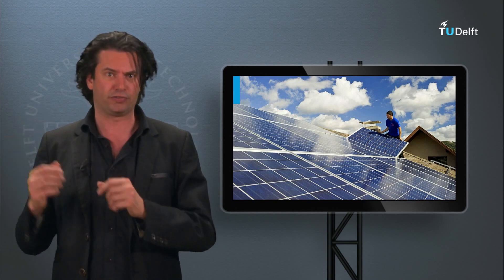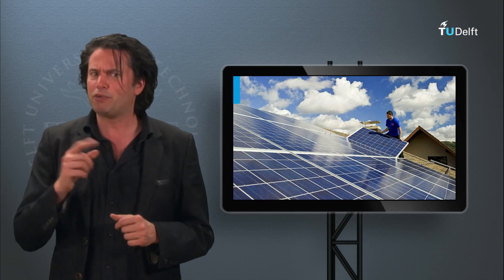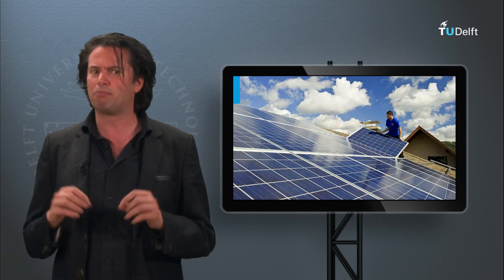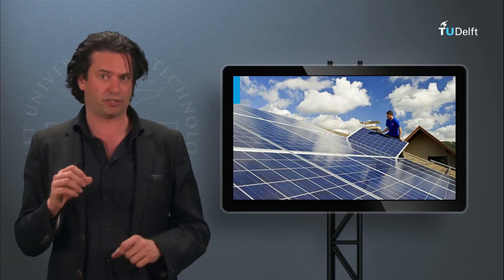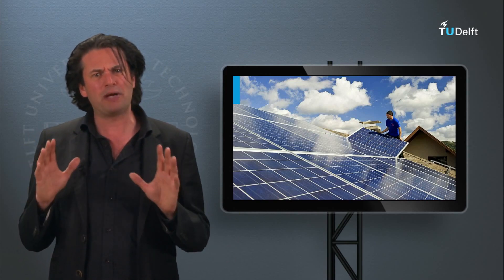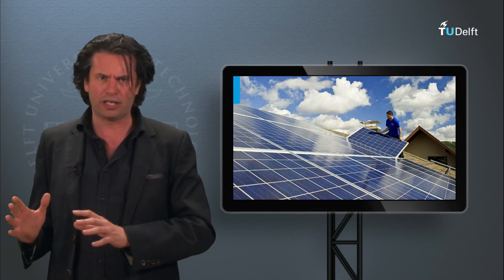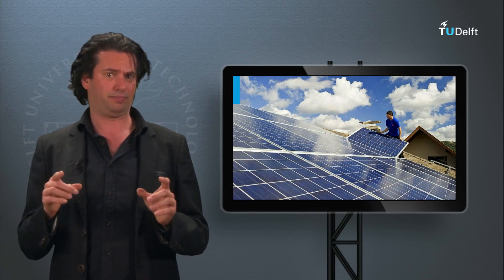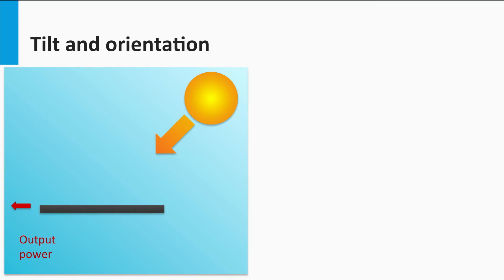Maximum power point tracking is a valuable tool to ensure that the PV module always operates at the maximum power point on an IV curve, under a given set of irradiance and temperature. This will be discussed in great detail in block 7.3, dedicated to maximum power point tracking. But how do we improve the amount of light falling on the PV module at the system level? The simplest way of doing that is by playing with the orientation and tilt of the module.